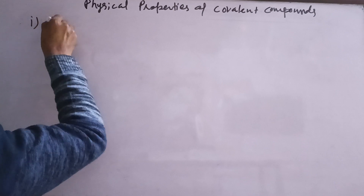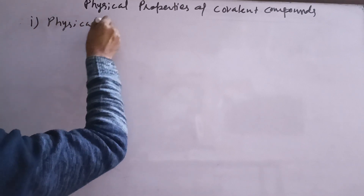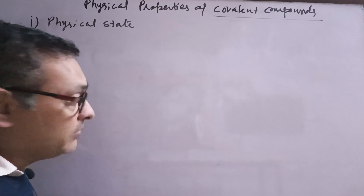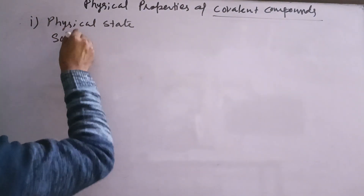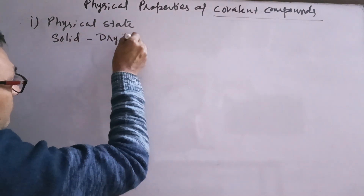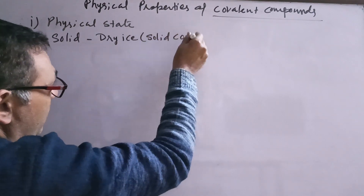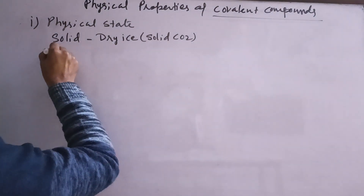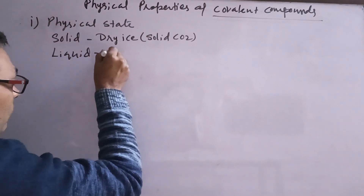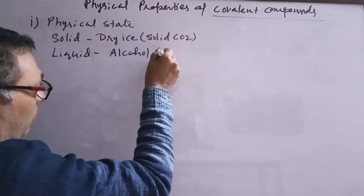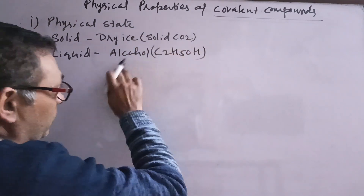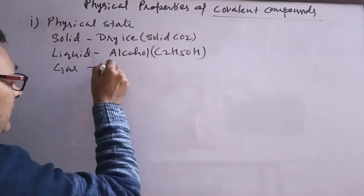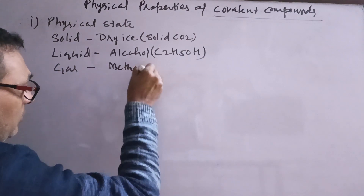First of all, let's talk about physical state. Covalent compounds are found in all three states: solid, liquid, and gas. For example, dry ice — which we also call solid CO2 — is found in solid state. Alcohol is found in liquid state, and methane is found in gaseous state at room temperature.